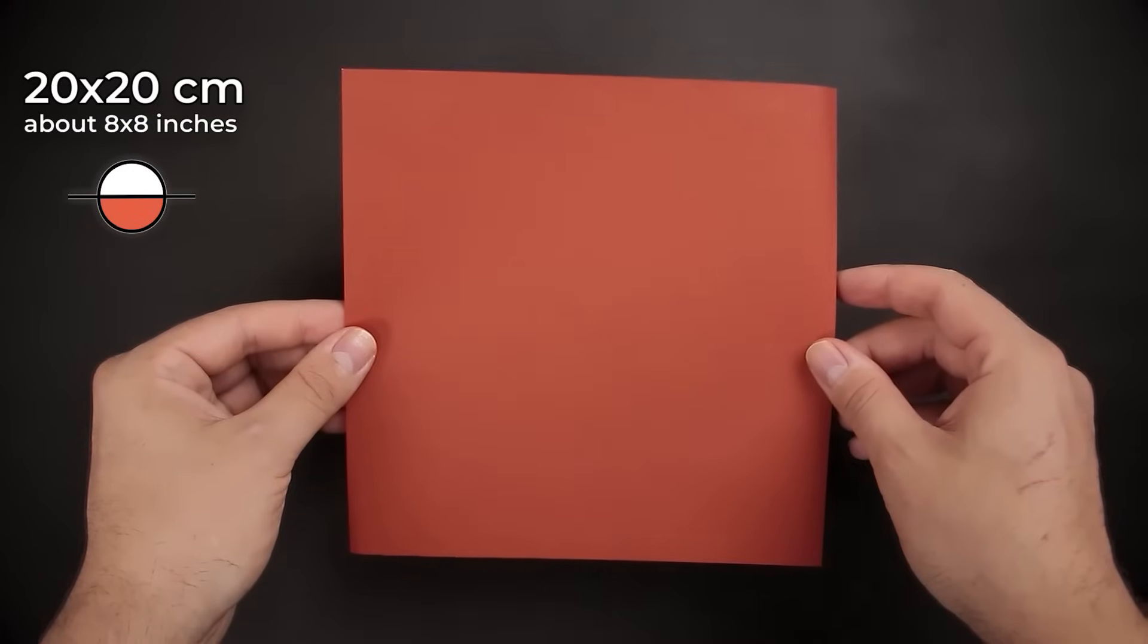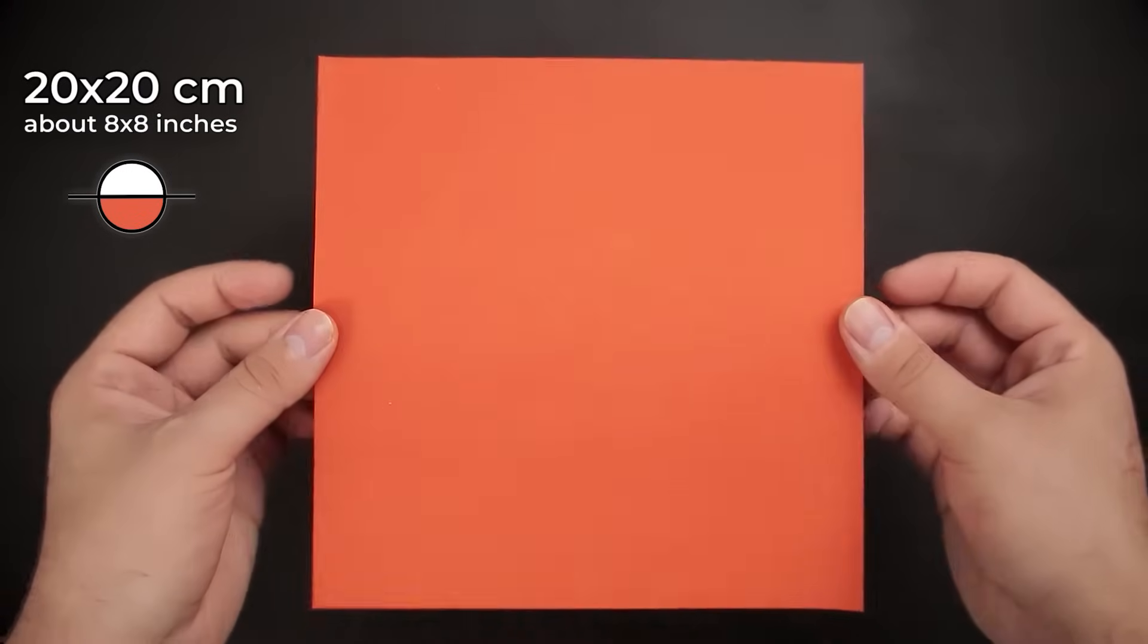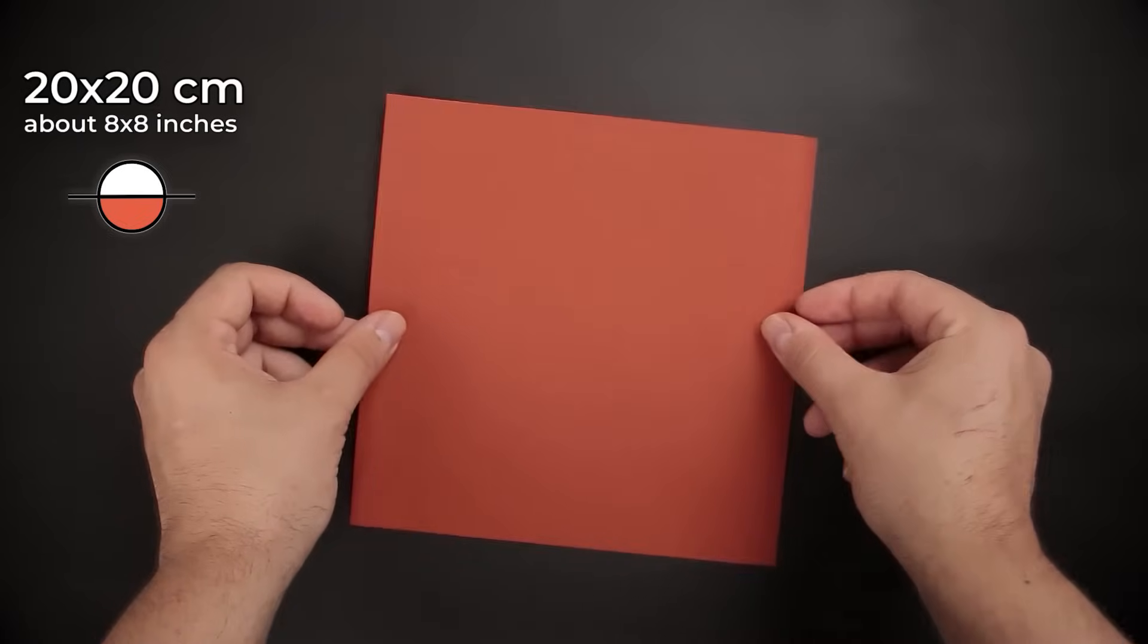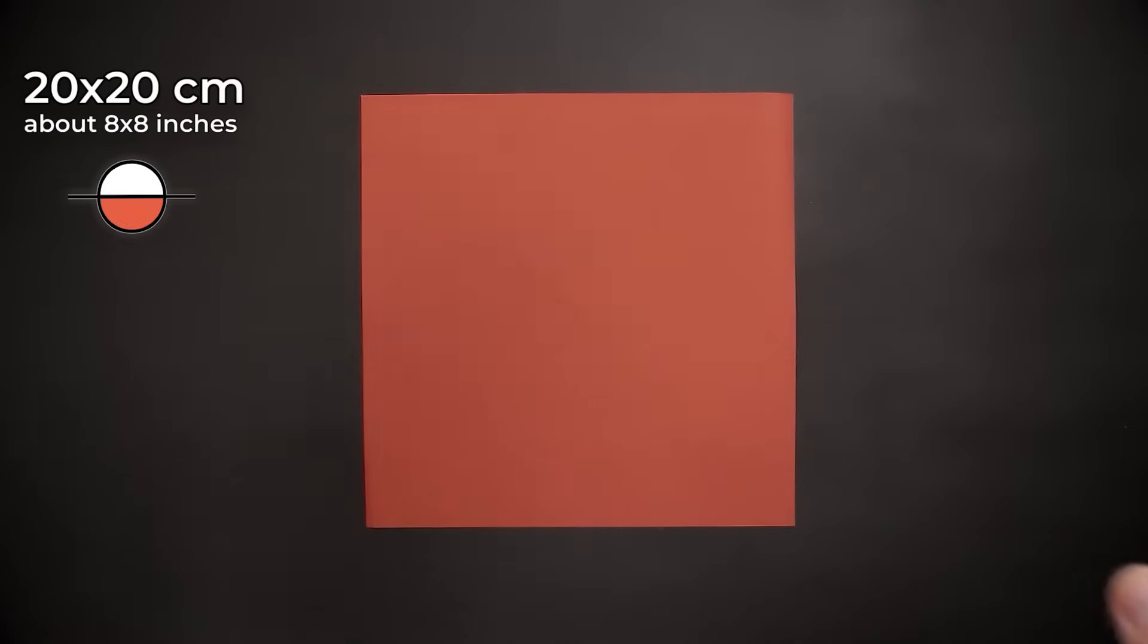For the first box, I'll use a square of paper of 20x20 cm, about 8x8 inches. If yours has only one colored side, start with the white side facing up.